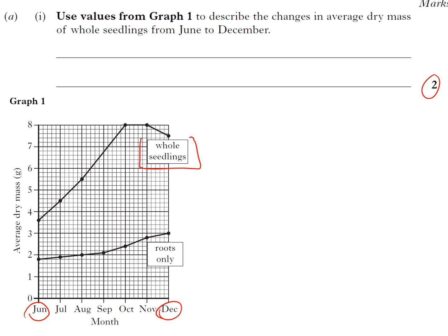But in this case it said June to December, so you have to look at the line that we need to describe and it is this line here. We need to decide which points you need to give. So you're going to have to give this point. So it starts in June at 3.6 grams.